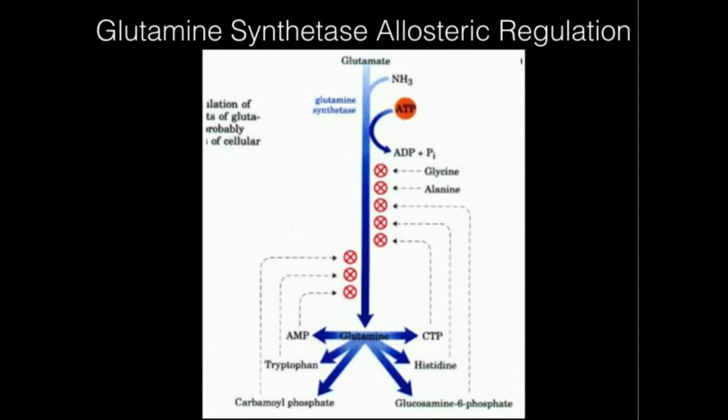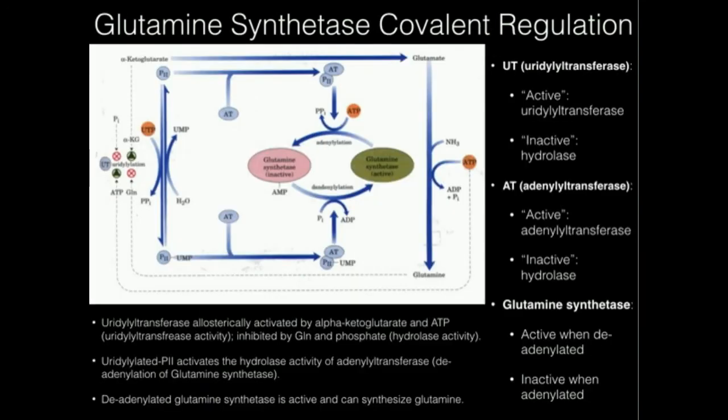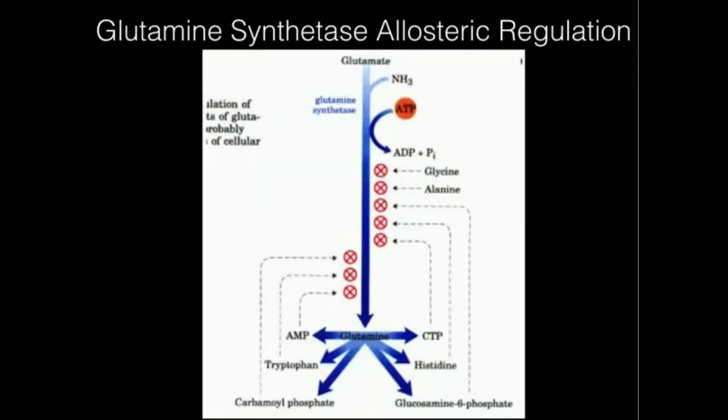Hopefully that makes a little bit of sense. In general, just remember glutamine synthetase is, for the most part, constitutively allosterically on, and the way it's allosterically regulated is by turning it off with allosteric inhibitors — the main ones shown right here. If you need to, go back and watch the video on covalent regulation of this enzyme.